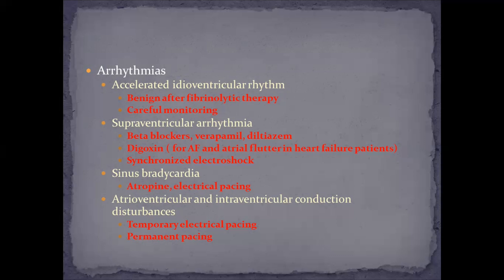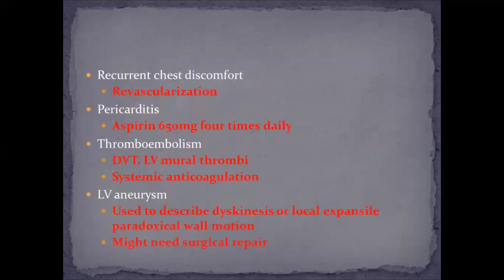Some patients may even need permanent pacing. Patients with recurrent ischemic discomfort should always be evaluated for revascularization. If the patient develops pericarditis, the drug of choice is NSAIDs — specifically aspirin 650 mg four times daily. For thromboembolic phenomena like DVT or left ventricular mural thrombi, systemic anticoagulation should be started. If the patient develops a left ventricular aneurysm, surgical repair may be needed.